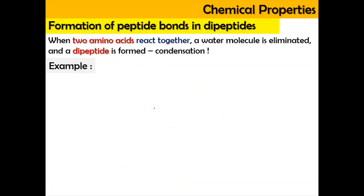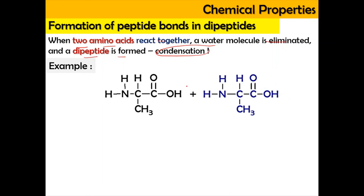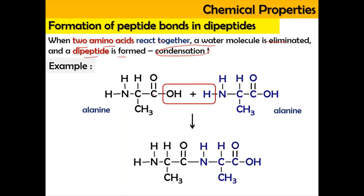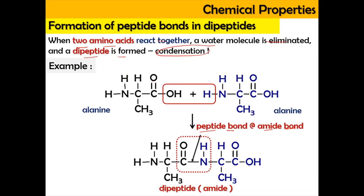Now for the last reaction: the formation of the peptide bond and dipeptide. Basically, when two amino acids react together, a water molecule is eliminated and a dipeptide is formed — this happens via a process known as condensation. For example, if we have alanine reacting with another alanine, the –OH from the carboxylate group and the –H from the amine group are removed, and the C=O and N–H are connected together to produce an amide functional group connected by a peptide bond or amide bond. This structure is a dipeptide.